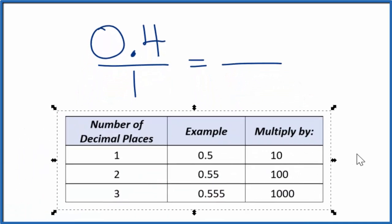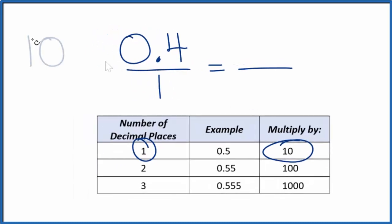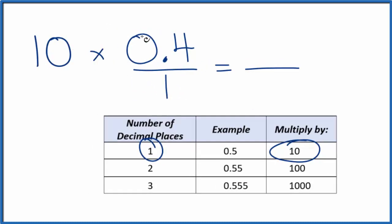Next, for 0.4, we have one decimal place. One decimal place, we're going to multiply it by 10. Because 10 times 0.4, that gives us 4. So now we have a whole number.